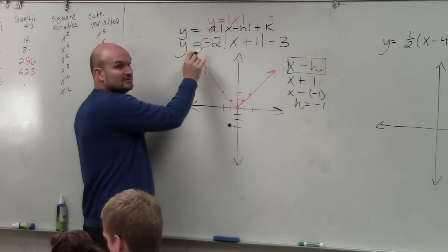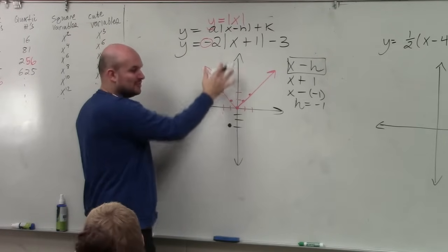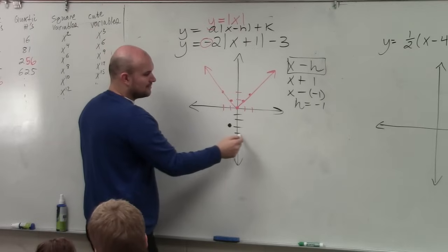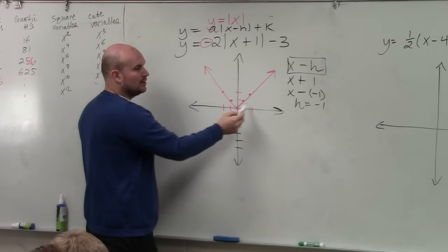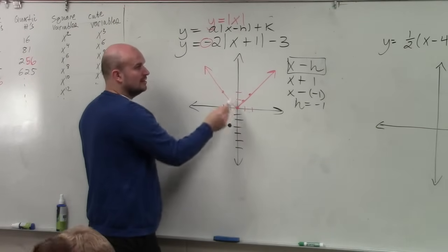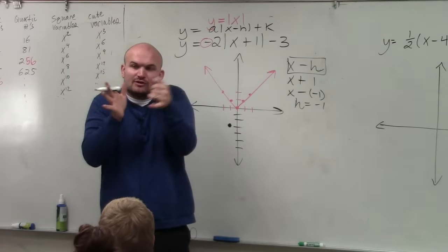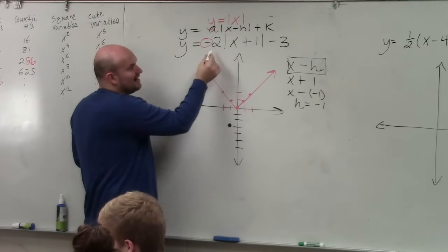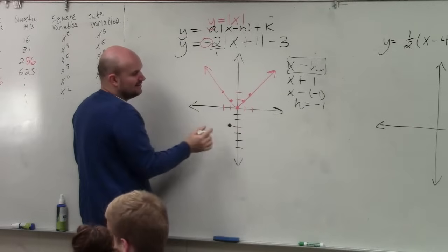This tells you to reflect down. Instead of the graph opening up, the graph opens down. Now, the typical formula for this was always over 1, up 1. Over 1, up 1. But now, you're multiplying by 2. That is compressing the graph horizontally. So what we did was, we kind of thought about this as kind of like your slope, in a way. You can kind of think of it like that.